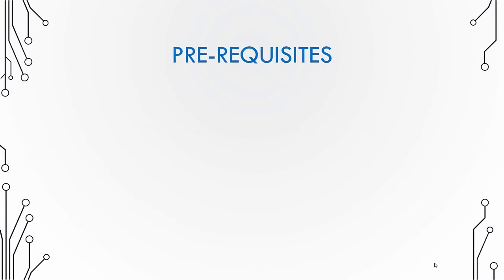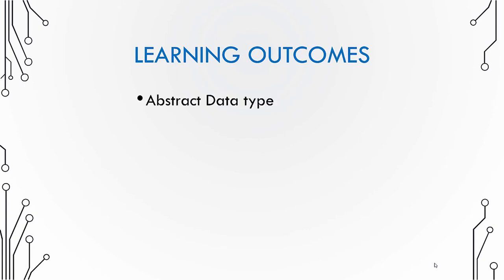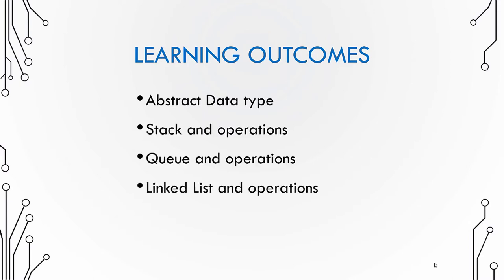The prerequisites for this course is that you should have a little experience in programming, be it a procedural programming language such as C, or an object-oriented programming language like C++, Java, etc. What you learn from this course is the concept of abstract data type and the three data structures — stack, queue, and linked list — along with their operations and implementation aspects. As part of exercises, you will have to implement some of these data structures in a particular language.